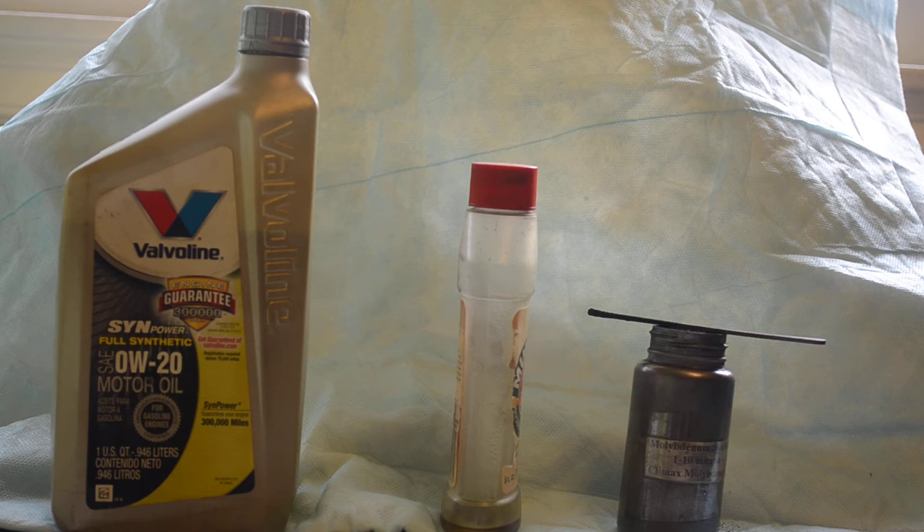Add maybe half an ounce to an ounce every two or three tanks of gas. Molybdenum has an affinity to attract to iron. It will attach to iron in any way possible. When it does that, it stays.